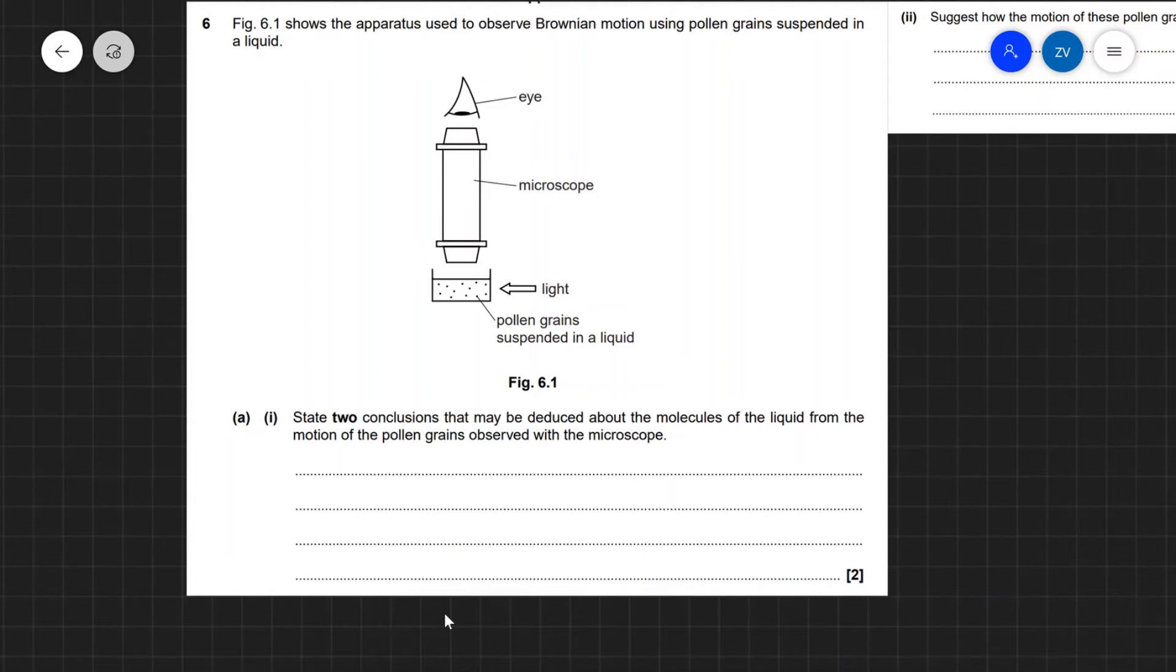Hello everyone, welcome back to Z-Physics. What we're going to be doing today is a past paper question from OCR from June 2014 on the subject of Brownian motion. Let's get started.